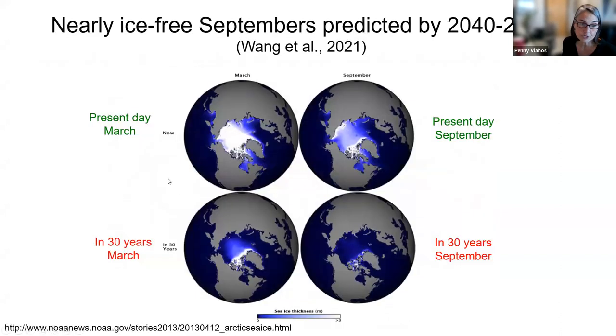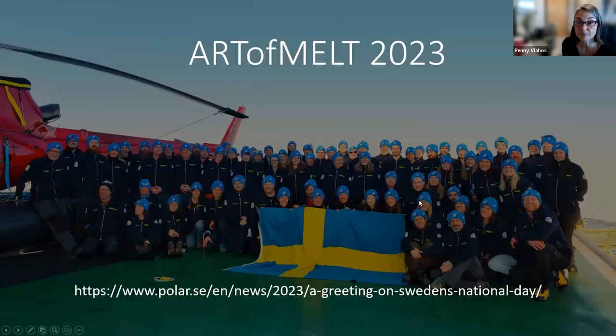Now, going forward, the predictions are that by 2040, 2050, between that decade, that we're going to have completely ice-free summer Septembers in the Arctic. And what that does to CO2 uptake, to biogenic gases, and to atmosphere-ocean interaction is all over the place in terms of estimates and model estimates. And getting those parameterizations correct is very important. So we go to the Art of Melt in 2023, and this is the entire group. This is crew and scientists all together, and that was National Swedish Day.